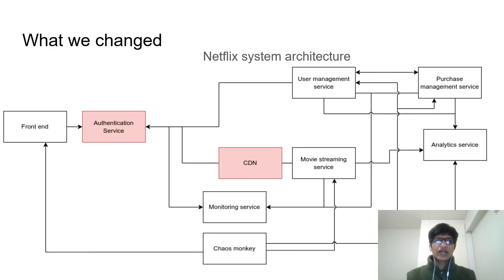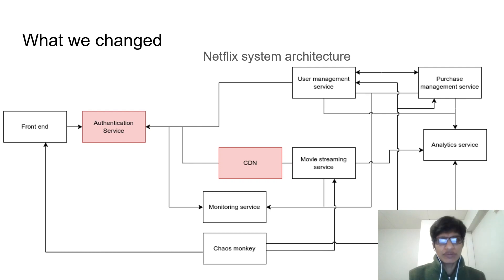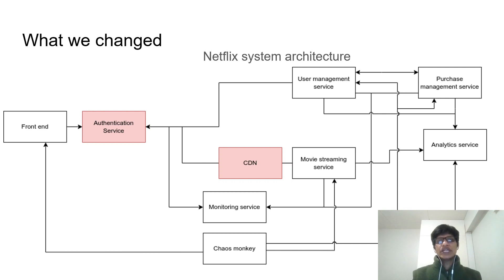There are two changes made on the Netflix system architecture. A new authentication service has been added to the diagram, which enables all the other services to use it for authentication. Additionally, a new CDN service has been added, because CDN enables caching and reducing latency, so user experience will be improved.